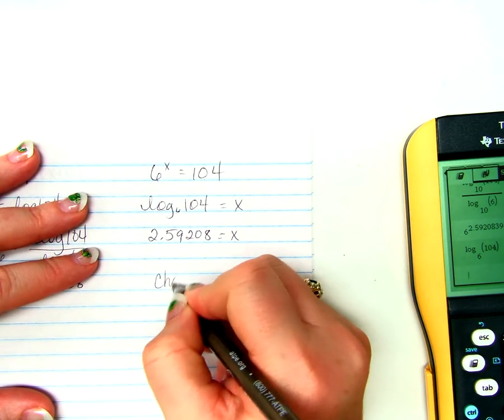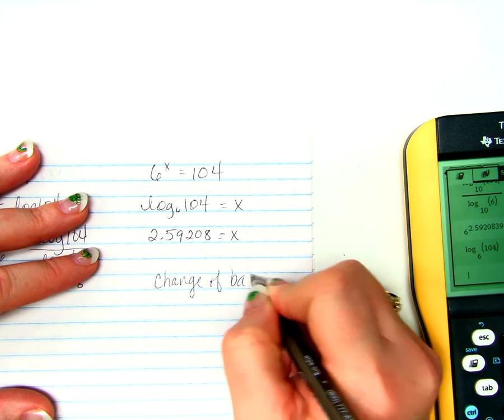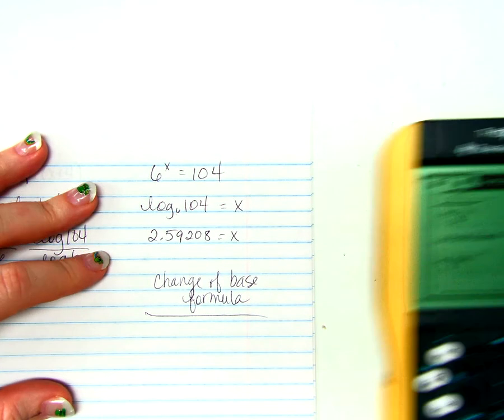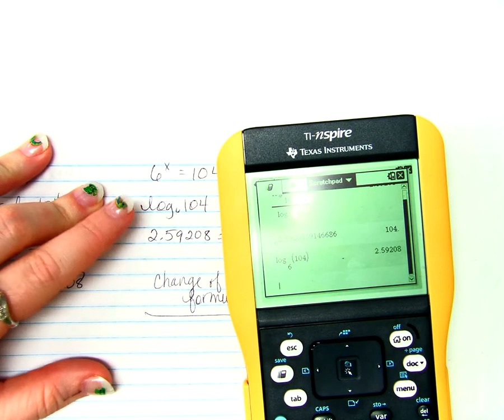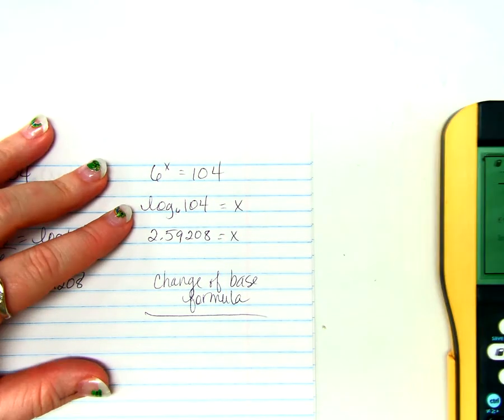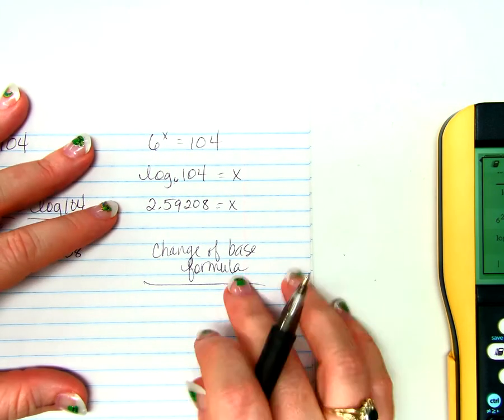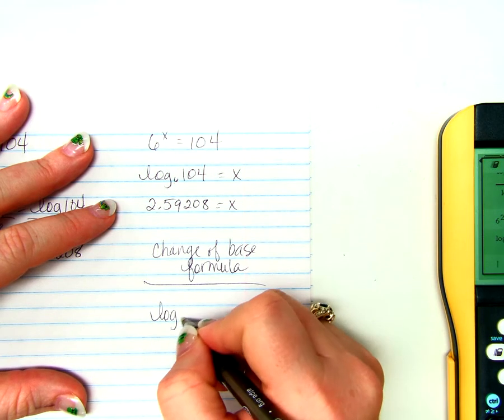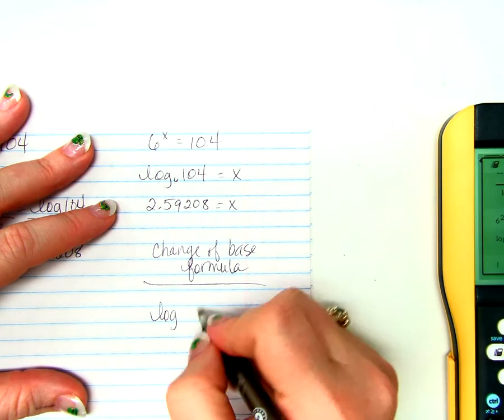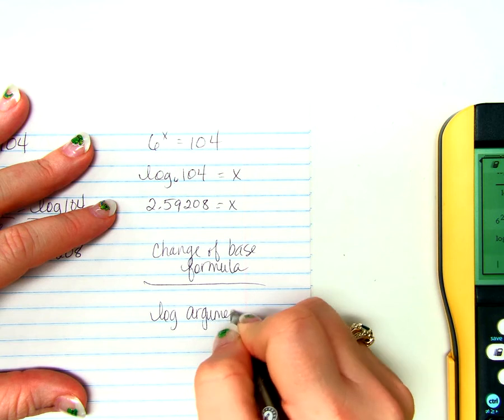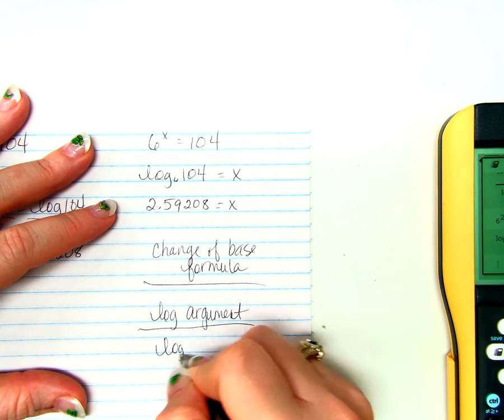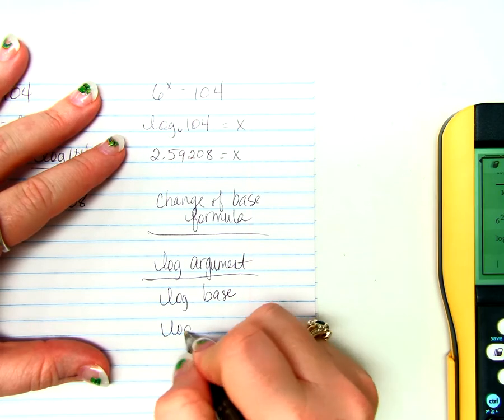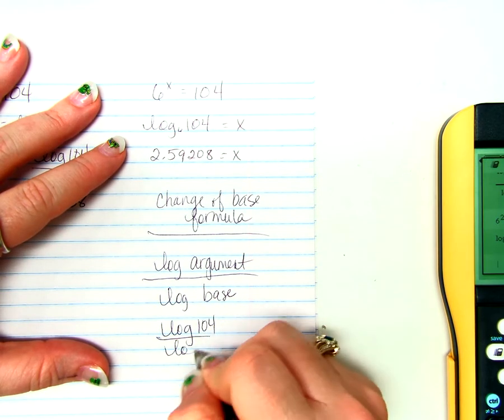So you would have to know something called the change of base formula. I know that we are using these calculators, and these calculators will do this problem. But I don't know what calculator you're going to have at college. I want you to know the change of base formula just in case. And the change of base formula is the log base 10 of the argument divided by the log base 10 of the base. So for this particular problem, it would be the log of 104 divided by the log of 6.